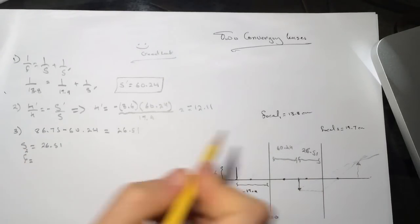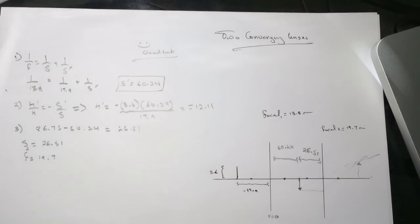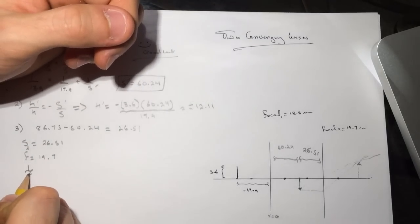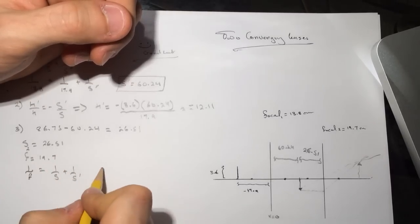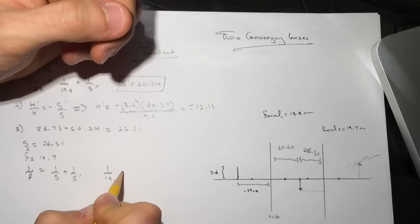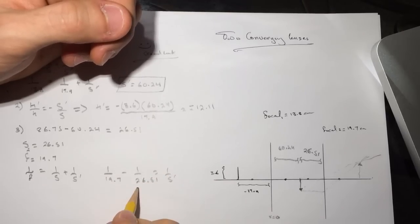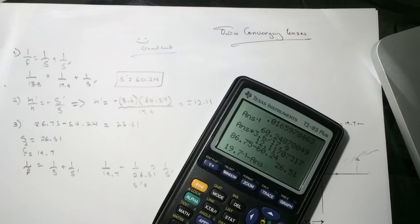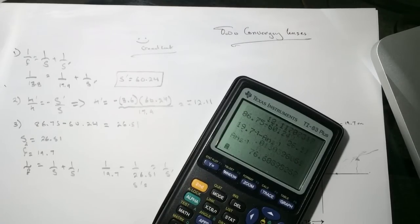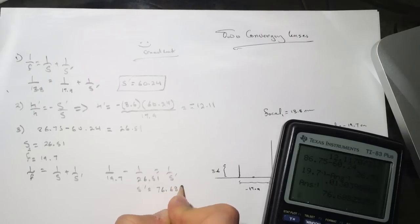We have the focal point which is focal point the second one, which is 19.7. Let's find the other one now. 1 over the focal point equals 1 over S plus 1 over S prime. So now we have S, so we'll get 1 over 19.7 minus 1 over 26.51 equals 1 over S prime. S prime will be equal to 19.7 minus the answer, so we get 76.68.